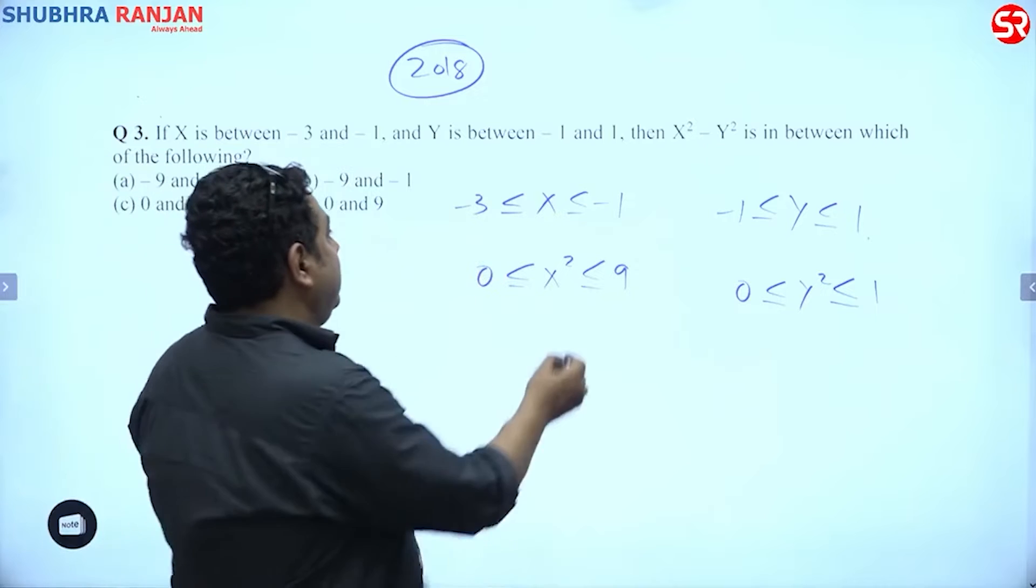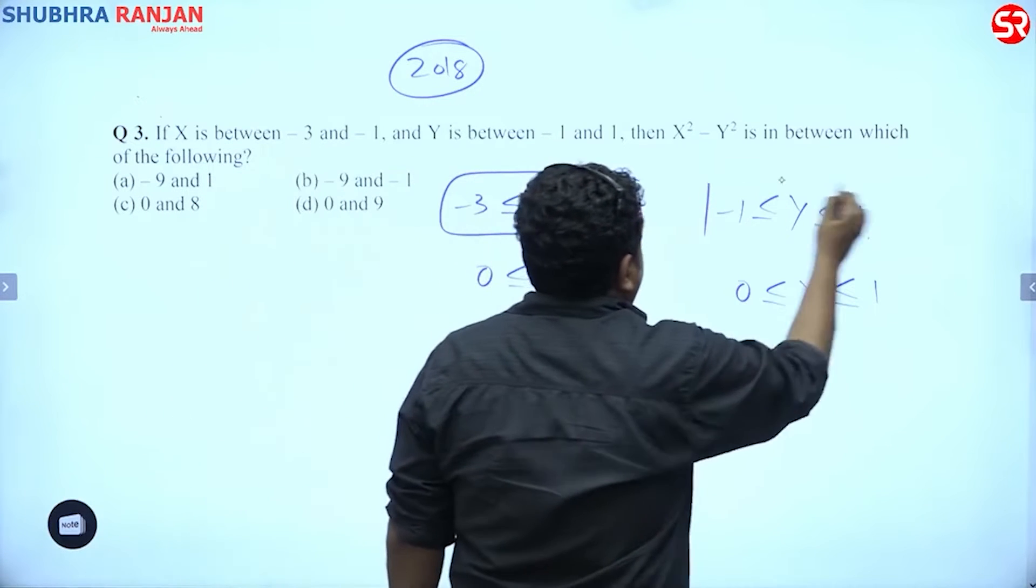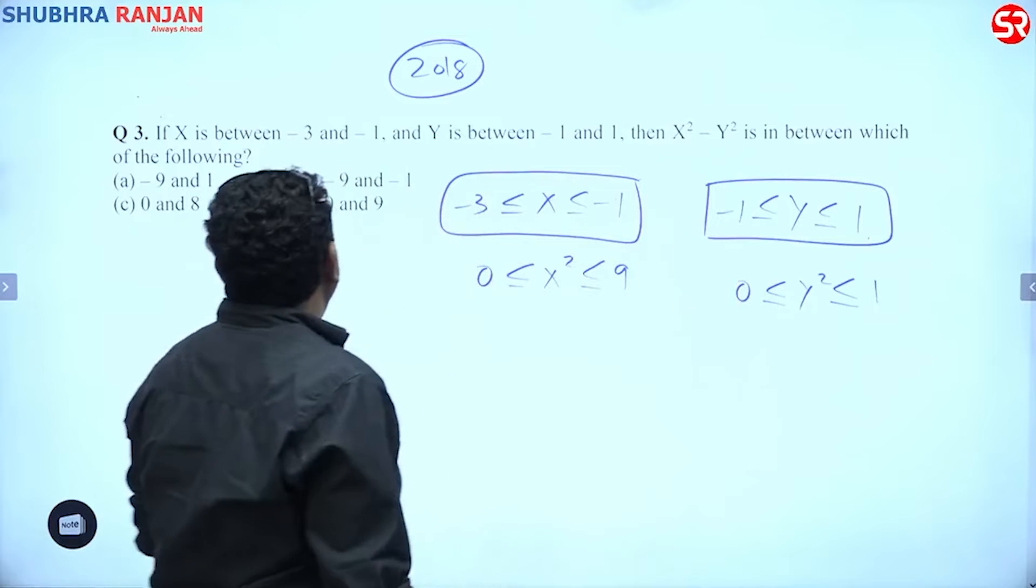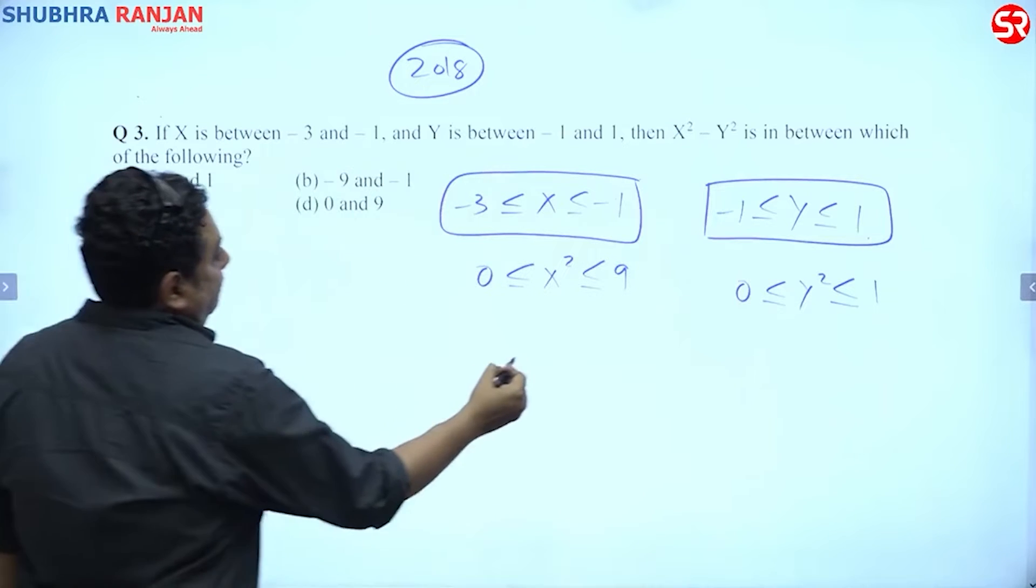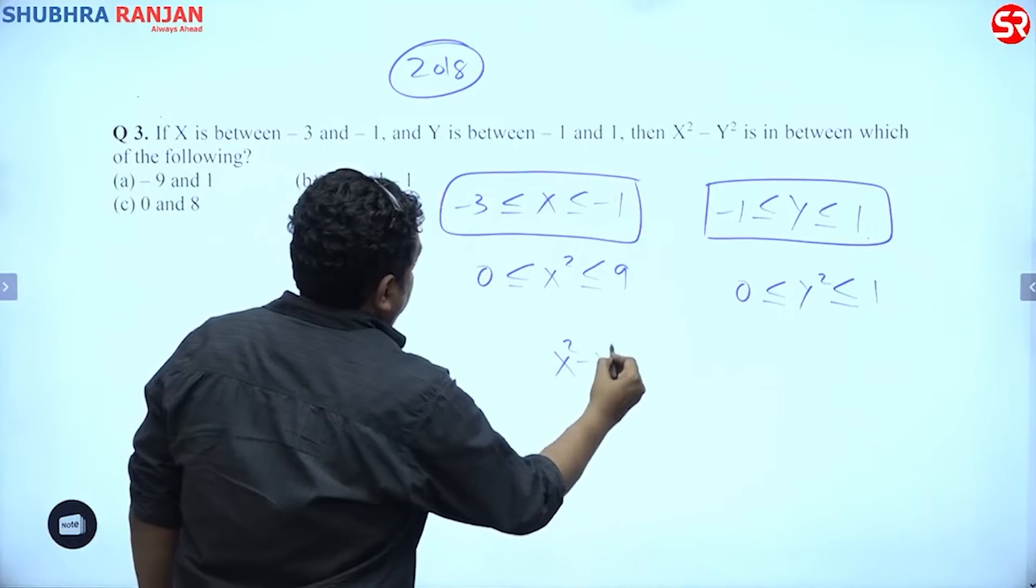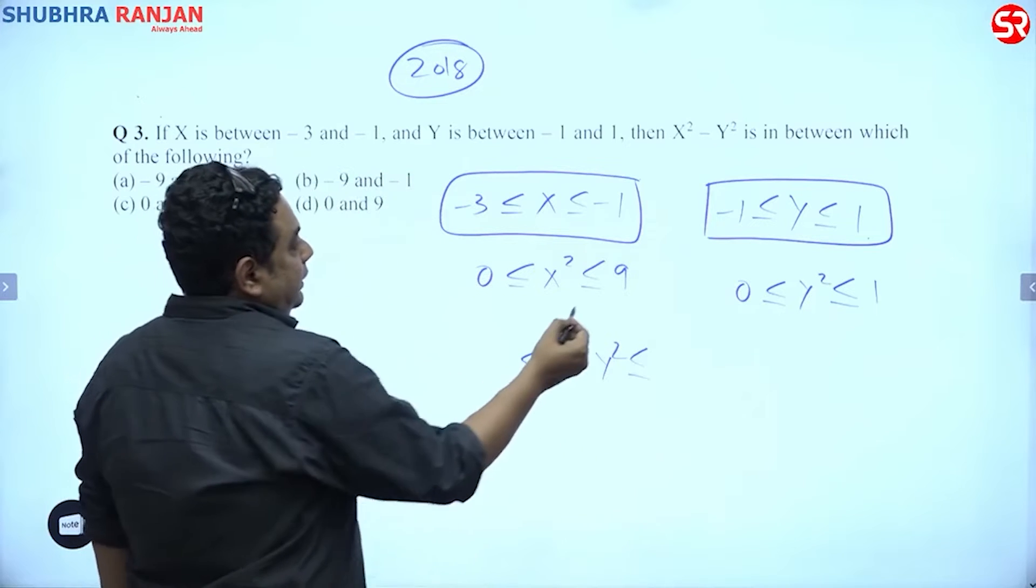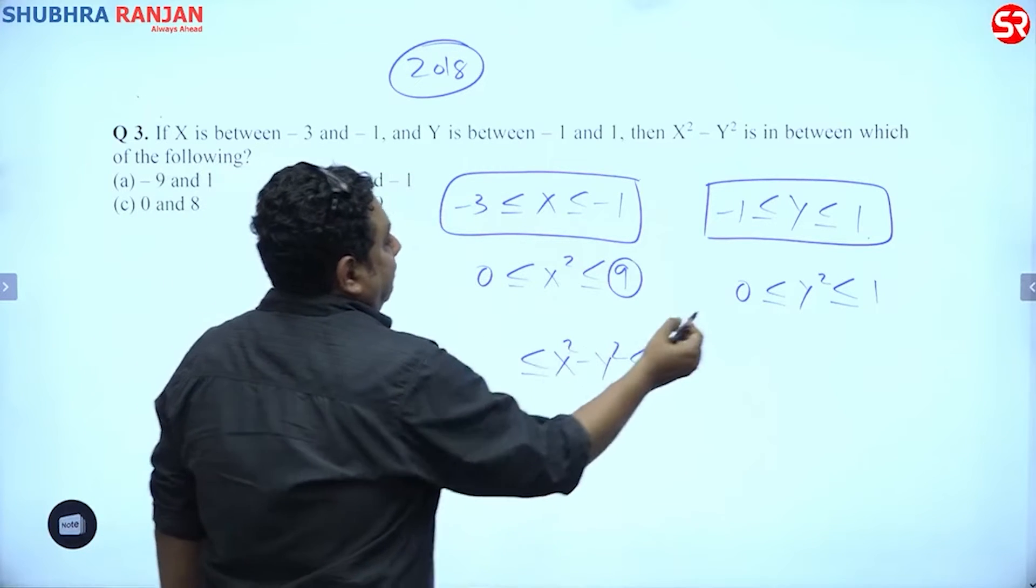0 was involved here also and 0 was involved here also, so minimum value would be 0. Then he says what is x square minus y square. So guys, maximum value is, see, this minus minimum, right? This is absolutely important.